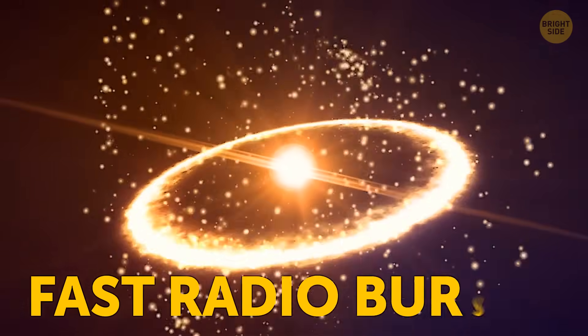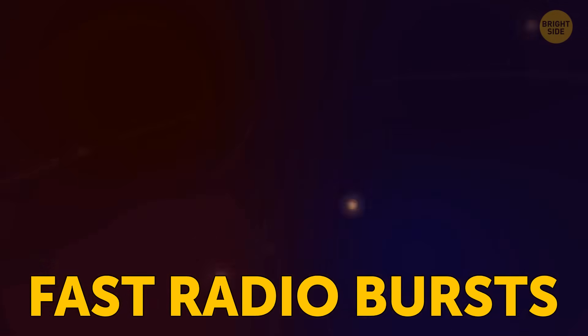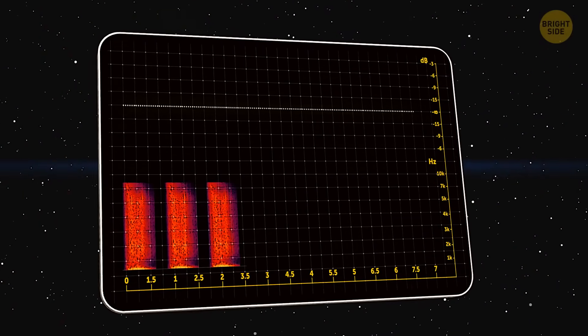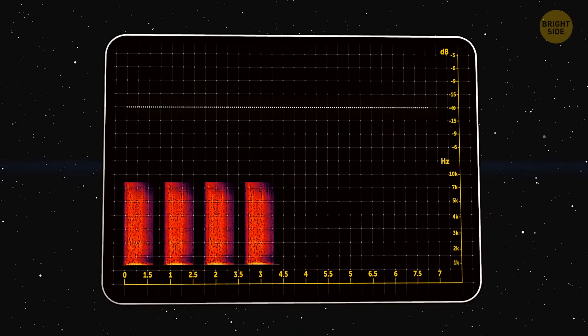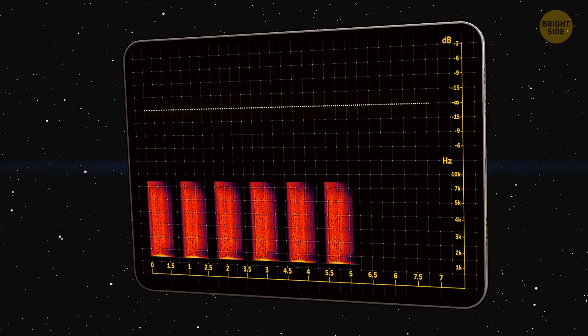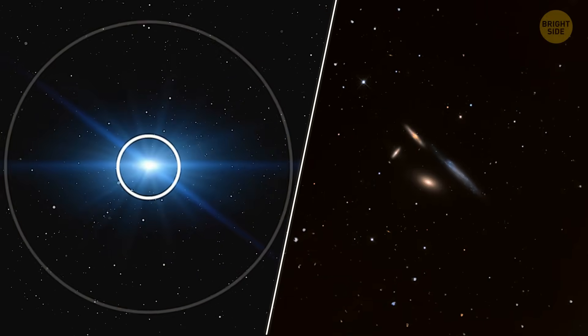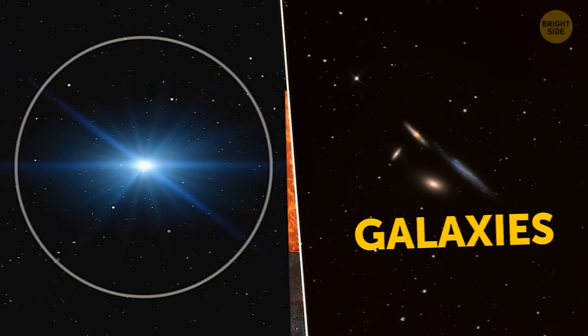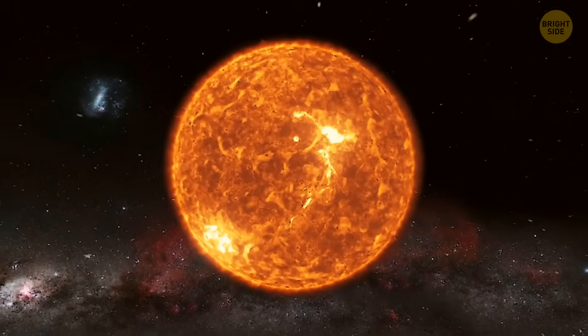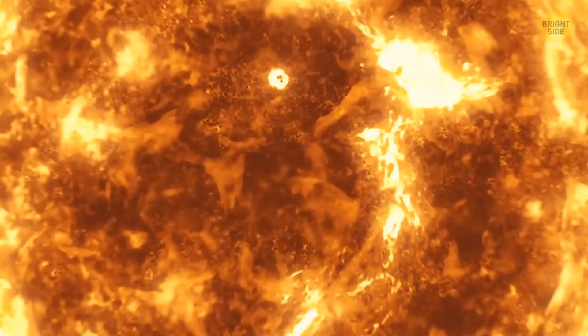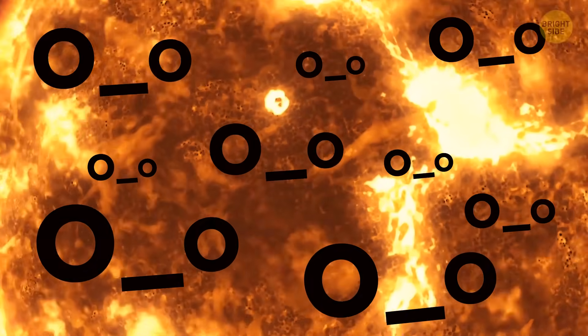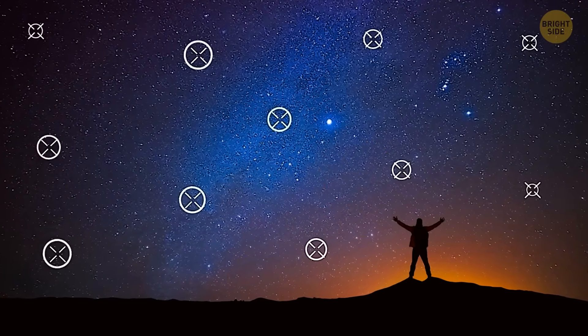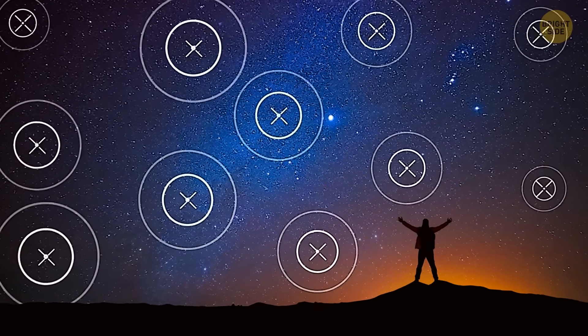For example, fast radio bursts, another mysterious type of signal we've been detecting. They're like quick, intense bursts of energy in the form of radio waves. They have a ton of energy. FRBs are so powerful that sometimes they can be brighter than entire galaxies. Now, imagine this. They release as much energy in a few milliseconds as our sun does in three whole days. Wow! These bursts happen all over the sky with huge frequencies, although some have been detected with lower frequencies.